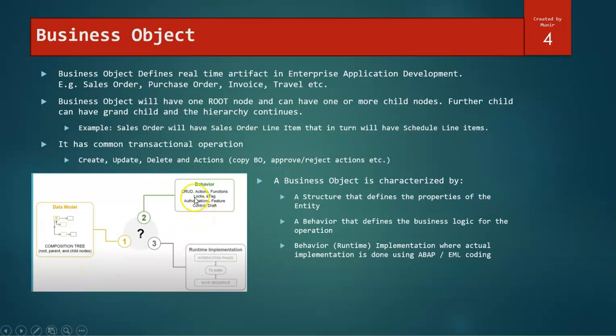We define the behavior on the data model that has already been created. The behavior will have CRUD operations, actions, logs, authorization, feature control, etc. Once the behavior is defined, we create a service definition and service binding that will actually use the runtime to execute the business logic. While creating a behavior definition, there are two ways of doing it: one is managed and one is unmanaged. We will look into both of them going ahead. Majorly, the runtime implementation where the actual implementation is done will use either ABAP or EML coding, which is entity manipulation language. We will look into EML as well going forward.